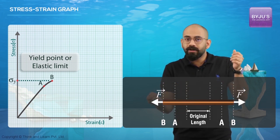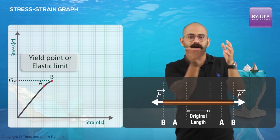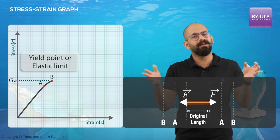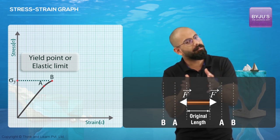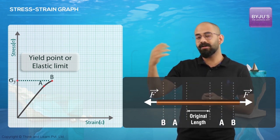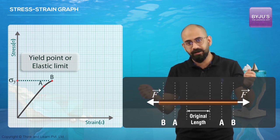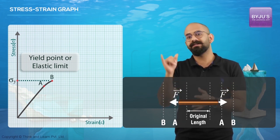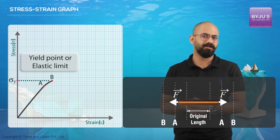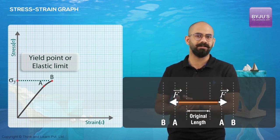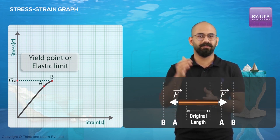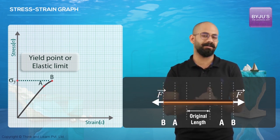Till point B — the yield point or elastic limit — elasticity is still seen. That is, if I stop somewhere before point B and reduce the force very slowly, the wire will come back to its original length. But if I apply a stress beyond point B and then try to bring it back, it will not reach the original length — there will be a permanent elongation even at zero stress.